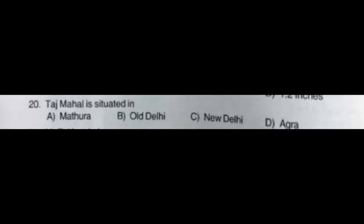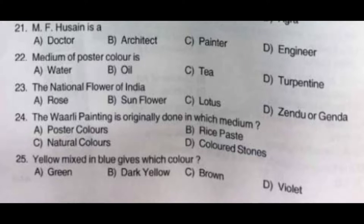The correct answer is option D: Agra. Question number twenty-one: M.F. Husain is a — option A: doctor, option B: architect, option C: painter, option D: engineer. The correct answer is option C: painter. Question number twenty-two: Medium of poster color is — option A: water, option B: oil, option C: tea, option D: turpentine. The correct answer is option A: water.